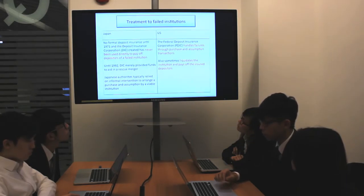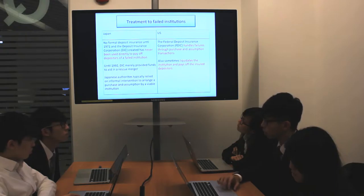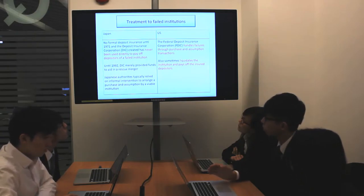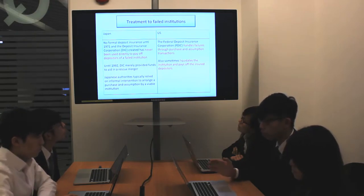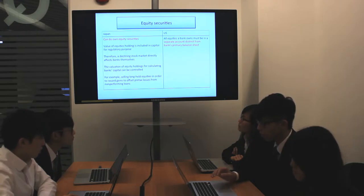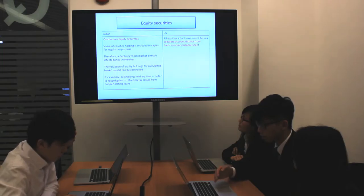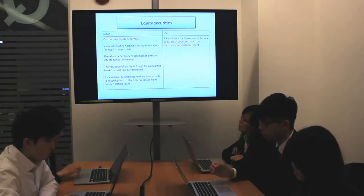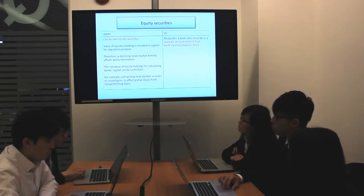Next, let's investigate what the government or financial organizations would do to help failed institutions. In Japan, the DIC had never been used to help depositors of a collapsed institution. In contrast, the FDIC in the U.S. addresses failures through purchase and assumption transactions. Lastly, for equity securities, Japanese banks could hold their own equity securities, allowing them to regulate their own performance. However, this could not happen in the U.S. because of the separate accounts primary policy.